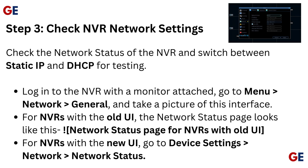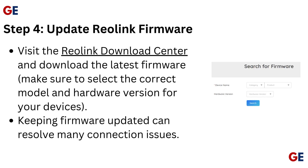Step 3: Check NVR network settings. Check the network status of the NVR and switch between static IP and DHCP for testing. Log in to the NVR with a monitor attached and go to Menu > Network > General, and take a picture of this interface. For NVRs with the old UI, the network status page looks like this. For NVRs with the new UI, go to Device Settings > Network > Network Status.